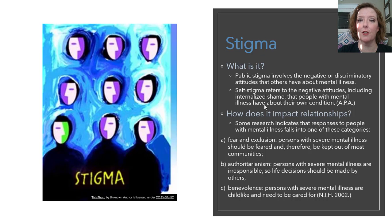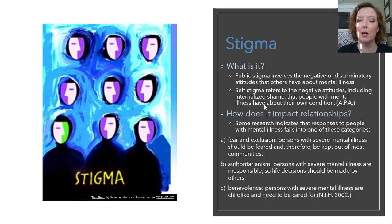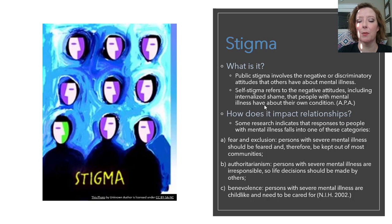So let's talk about stigma. First of all, what is stigma? There are two types of stigma: public stigma and self-stigma. Public stigma involves the negative or discriminatory attitudes that others have about mental illness. Self-stigma refers to the negative attitudes, including internalized shame, that people with mental illness have about their own condition. Research on stigma's impact has concluded that there are three basic categories of how stigma can impact relationships. People will respond to someone with mental illness with fear and exclusion, with authoritarianism, or with benevolence.